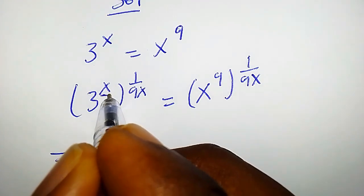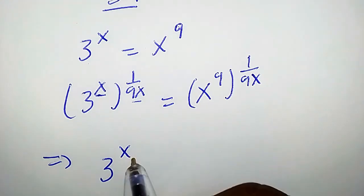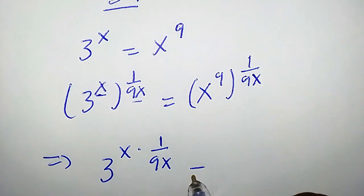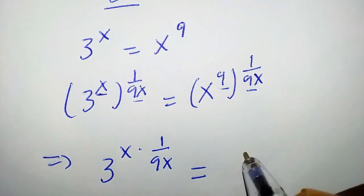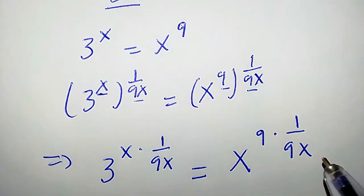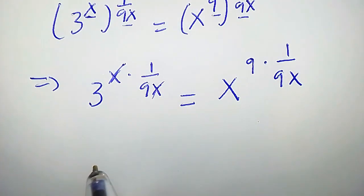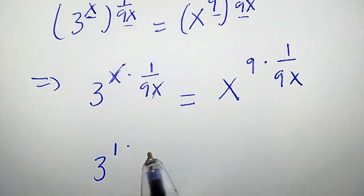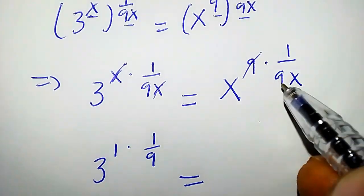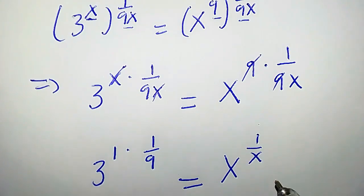We multiply the powers together. So we are going to have 3 to the power of x times 1 over 9x equals to x to the power of 9 times 1 over 9x. x cancels x, so we are left with 3 to the power of 1 over 9 equals to. 9 also cancels 9, so we have x to the power of 1 over x on the right hand side.